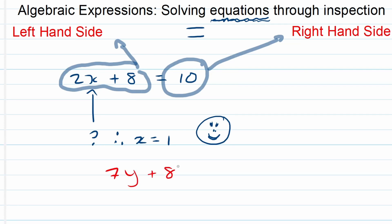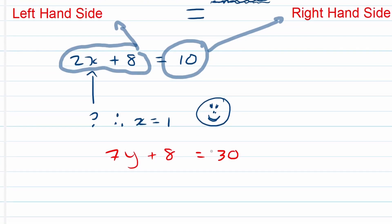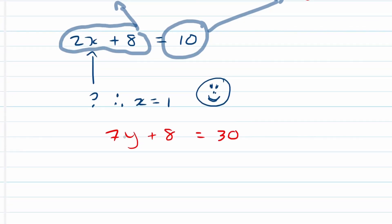7y plus 8 is equal to 30. So again, you've got the right hand side equals to 30. The left hand side is 7y plus 8. So the left hand side we need to work with that. So there is an 8, there is a 30. So if you say, what is 8 units less than 30? That's 22.